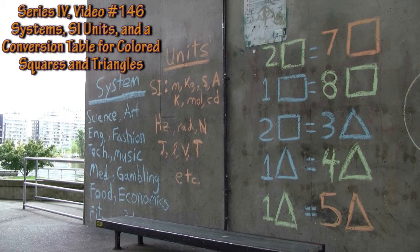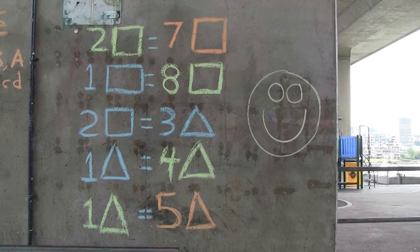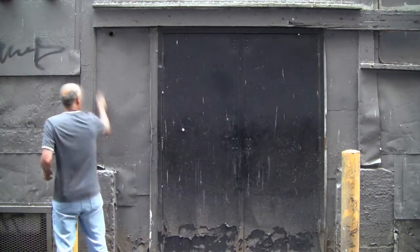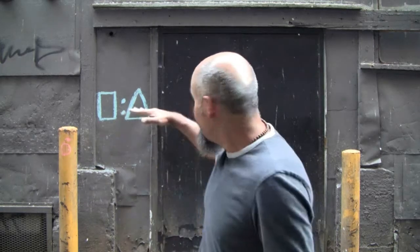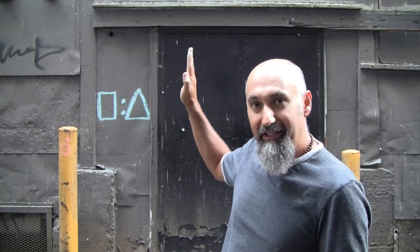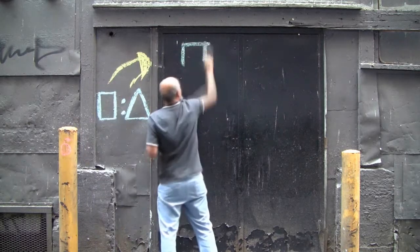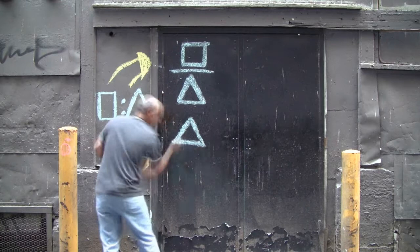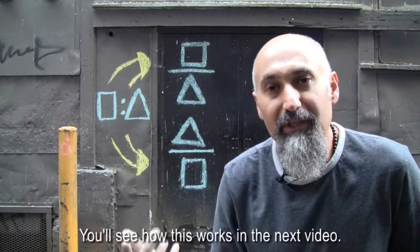We're going to talk about the system we set up — the world of color squares and triangles — and the connection we built between these two worlds. The conversion we defined is: two blue squares equals three blue triangles. The two dots represent an equal sign — that's the connection between the two systems. From this, you can take the ratio and rotate it 90 degrees one way or the other to create two different fractions, because the equal sign in a ratio is essentially the division or fraction sign.